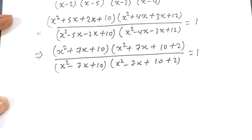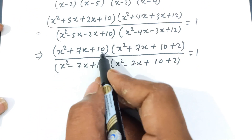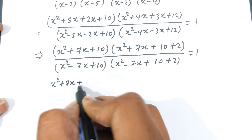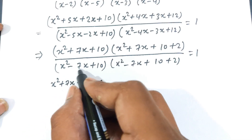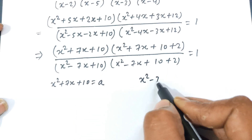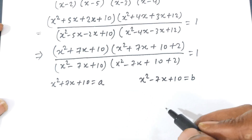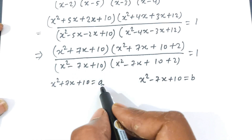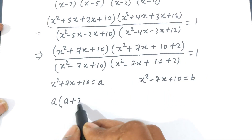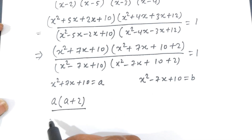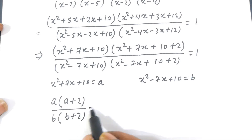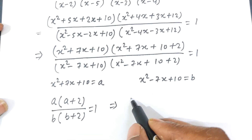Now look carefully. In the numerator and denominator, let a = x² + 7x + 10 and b = x² - 7x + 10. Then the expression becomes a(a + 2) divided by b(b + 2), and this equals 1.